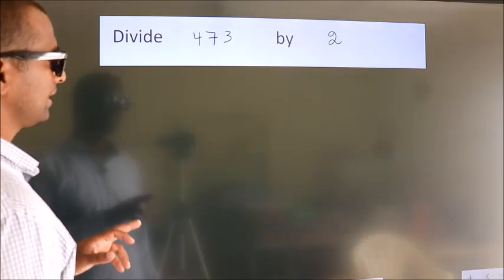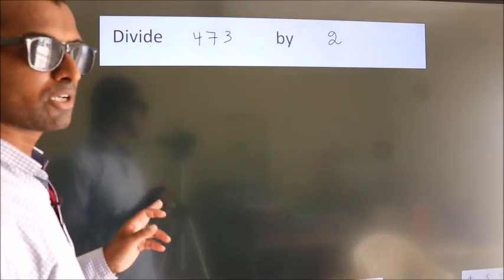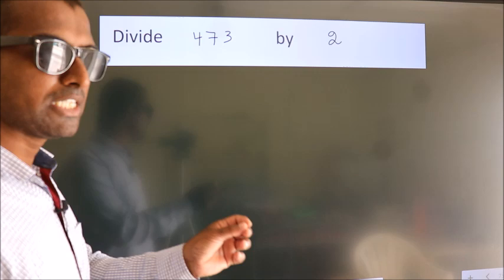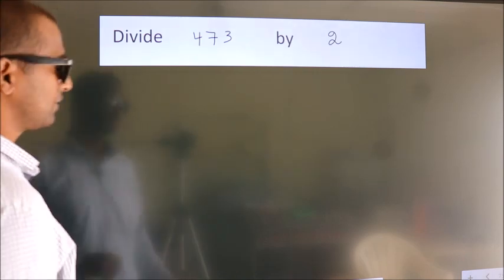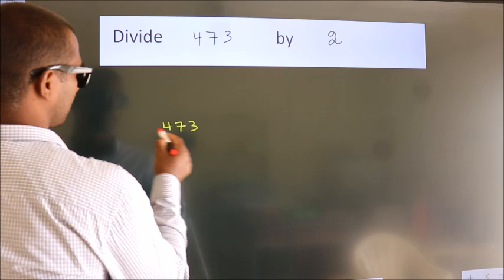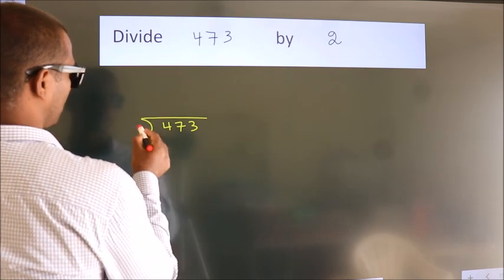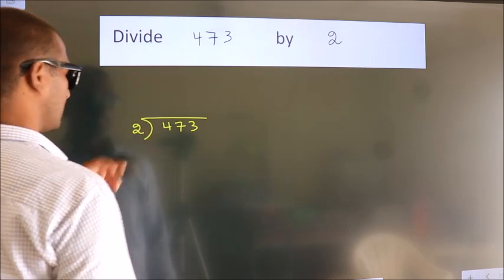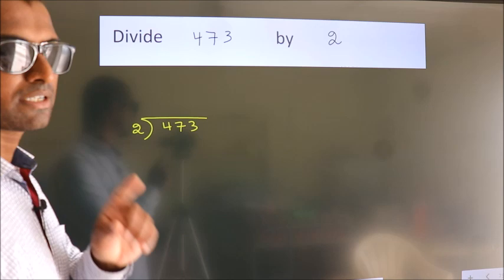Divide 473 by 2. To do this division, we should frame it in this way: 473 here, 2 here. This is your step 1.